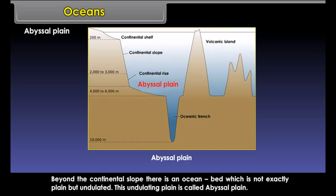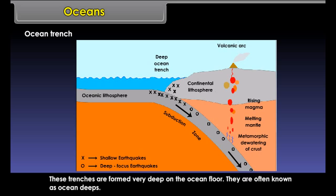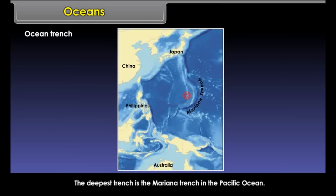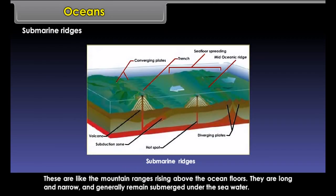Beyond the continental slope, there is an ocean bed which is not exactly flat but undulated. This undulating plain is called the abyssal plain. Ocean trenches are believed to be formed due to faulting on the ocean floor. These trenches are very deep and are often known as ocean deeps. The deepest trench is the Mariana Trench in the Pacific Ocean.